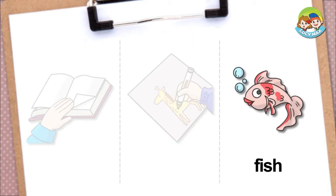Fish. This is a fish. It lives in water. You can see fish in a river or sea. Do you have a fish? Does your friend have a fish?